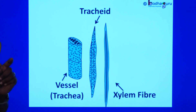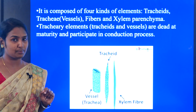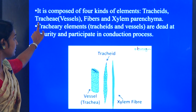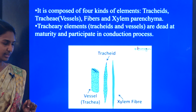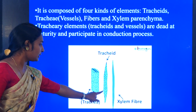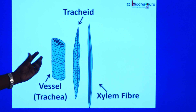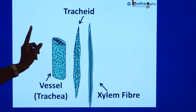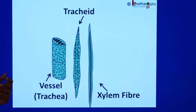Trachea elements are the ones that help in conducting water and minerals. The two trachea elements are tracheids and trachea, also known as vessels. Tracheids are spindle shaped and elongated, but in case of trachea or vessels, it is cylindrical in nature. In the tracheids, we see the deposition — that deposition we call it as lignin deposition, and the process we call it as lignification.